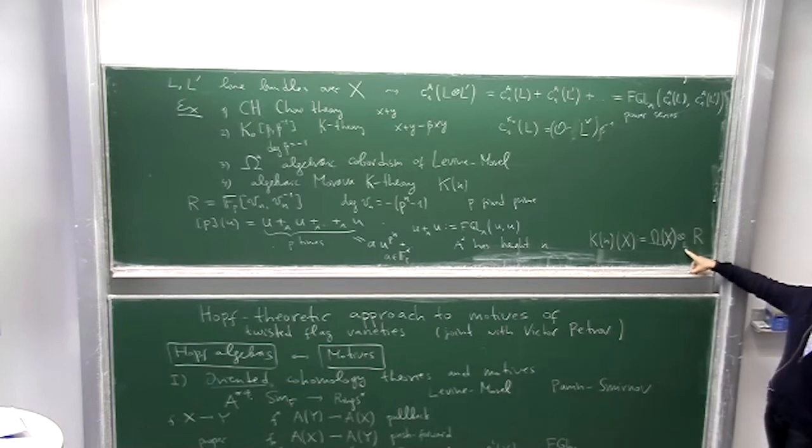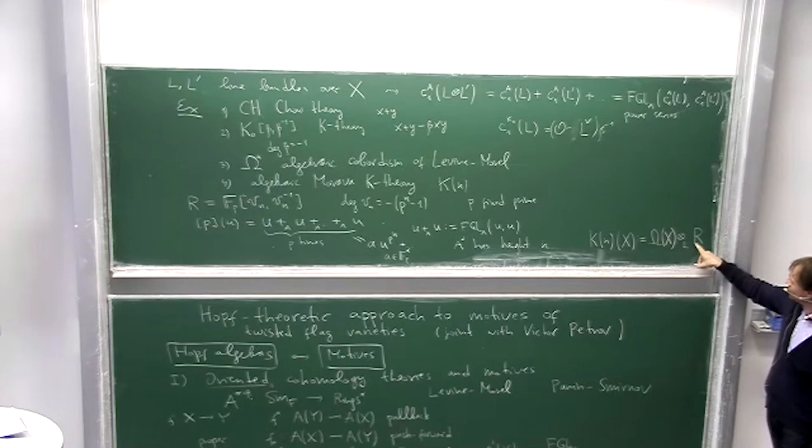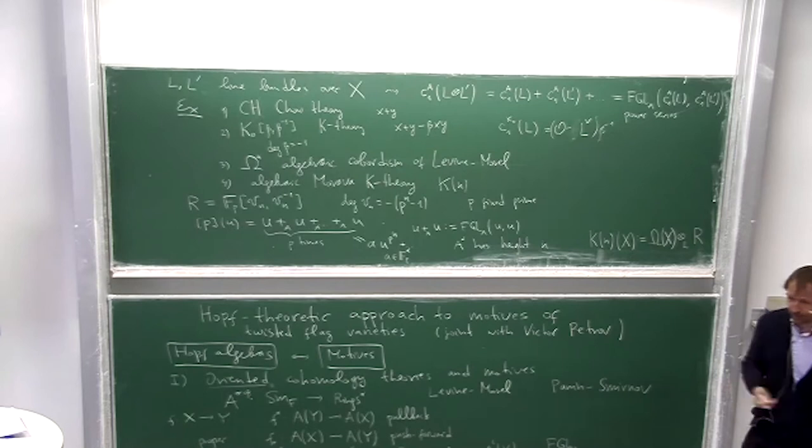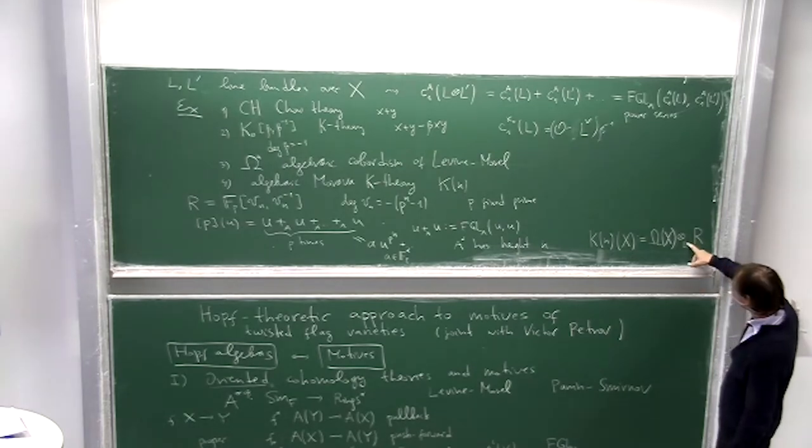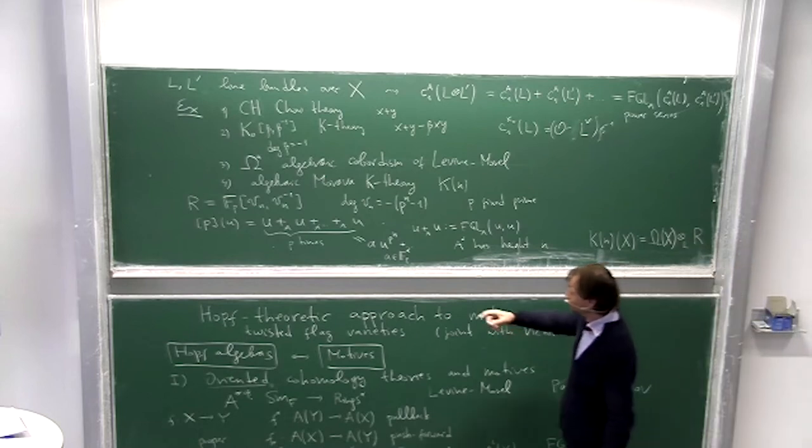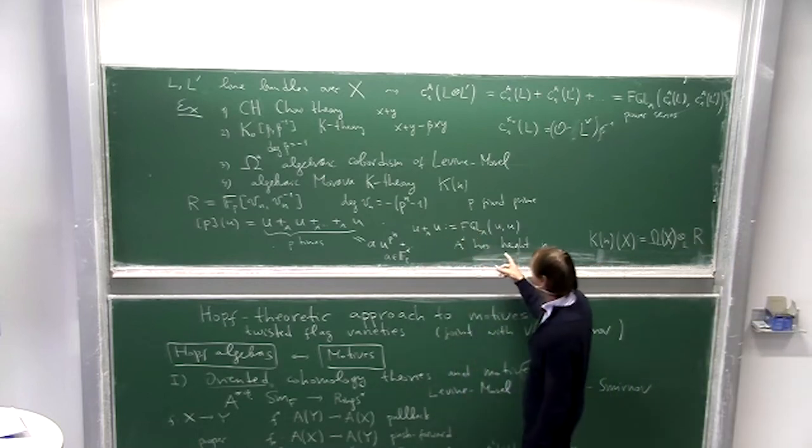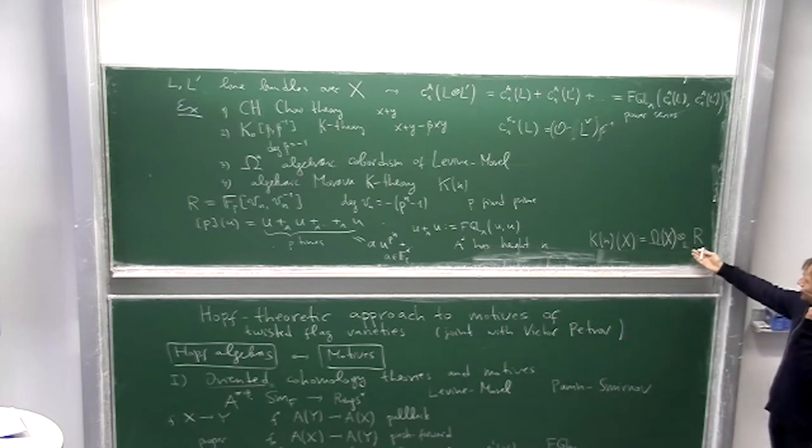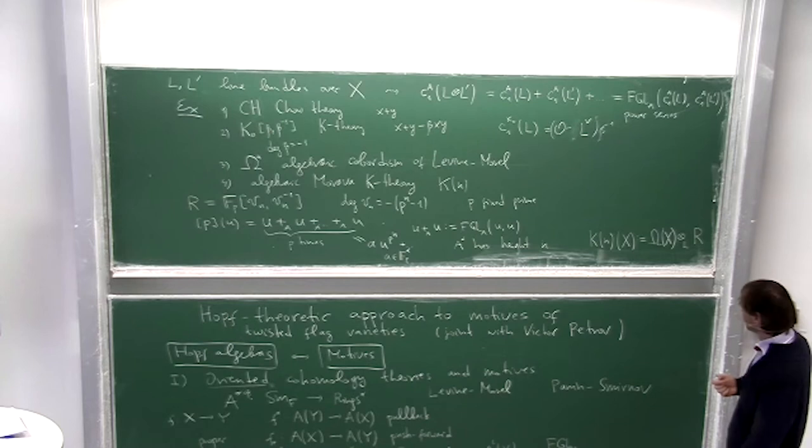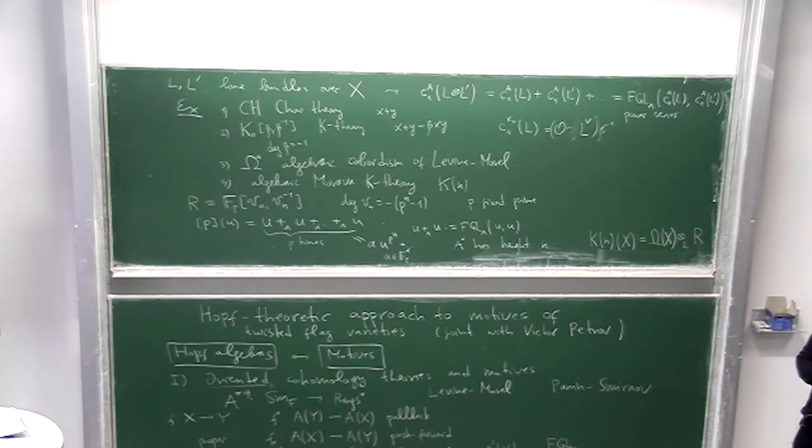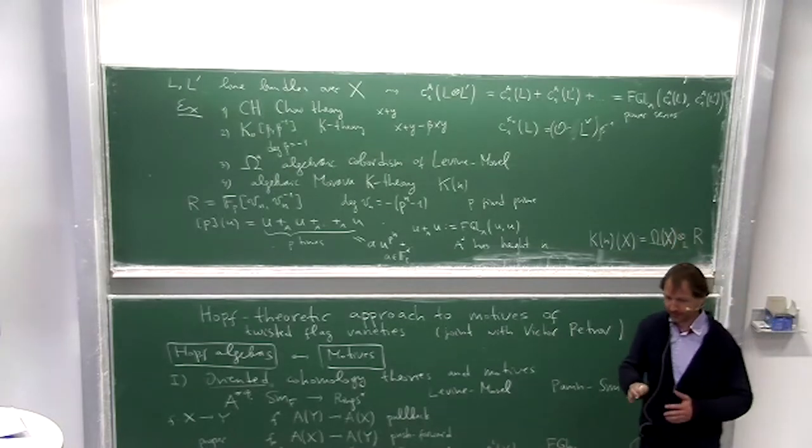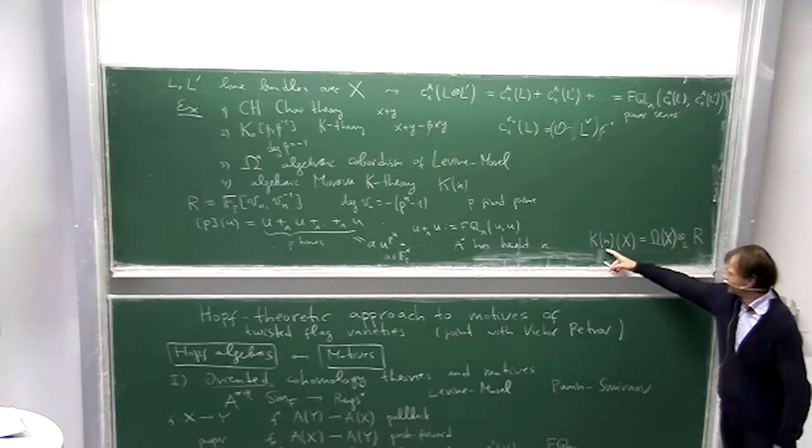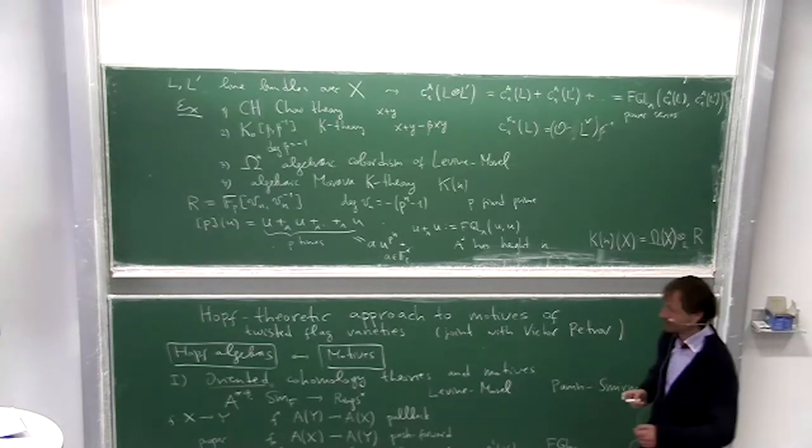In this case we say that the theory A has height n. So for instance K zero has height one. Just plug in and see. And Chow theory has height infinity, it never happens. Well, and for the Morava theory k_n, if you take a formal group law of height n, actually it's not unique but it's some formal group law of height n, and then k_n is defined. k_n is defined as Omega of X.